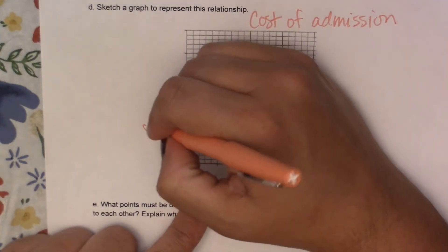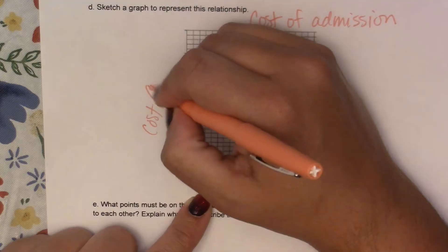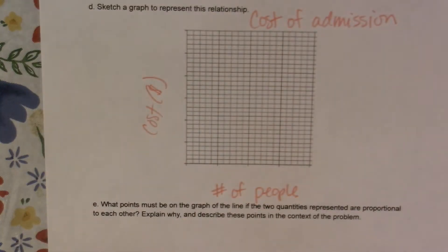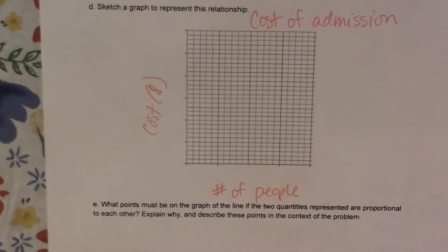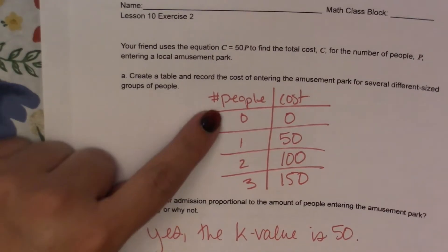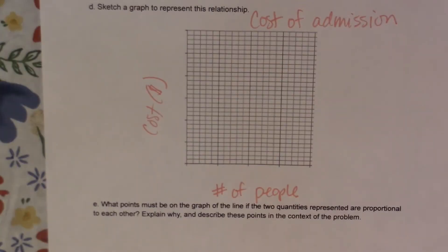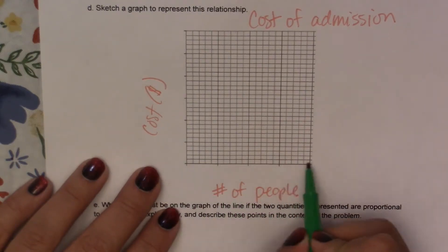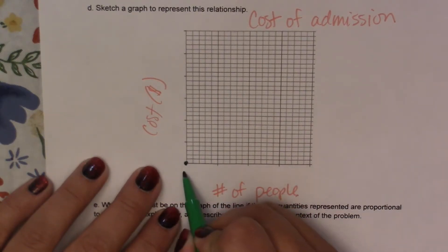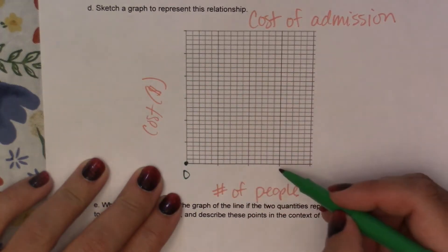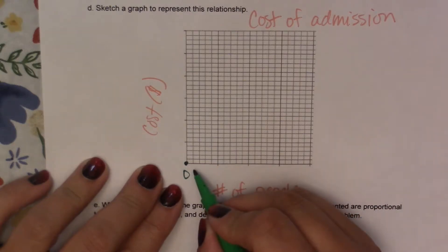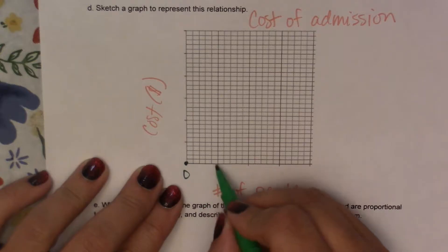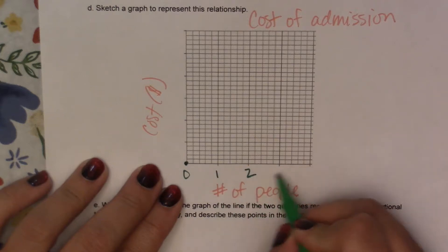And then along here is my cost and I'm going to show that it's in dollars. Alright, so my people are 0, 1, 2, and 3, so I'm just going to count by 1's. I'm going to use these solid lines here. Now you'll have to adjust your intervals based on what numbers you chose. So if you chose 5, 10, 15, you could count by 5's. If you chose like 10, 20, 30, you could count by 10's.